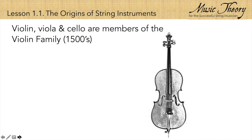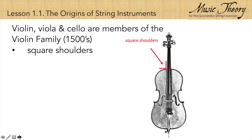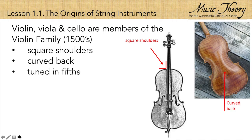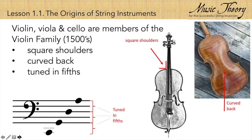The violin, viola, and cello are members of the violin family, which appeared in the 1500s. You'll notice they have square shoulders, a curved back, and they are tuned in fifths, which gives them a wider range, and their new design allowed them to play much louder than the older viols.